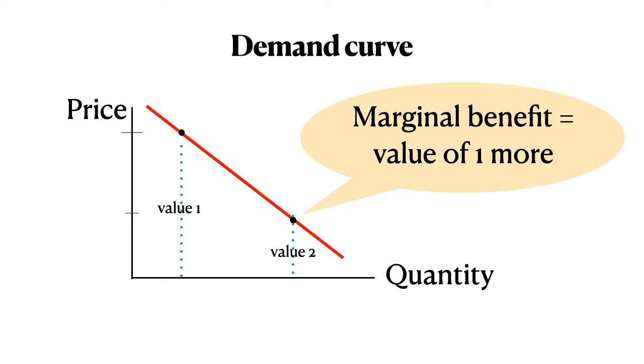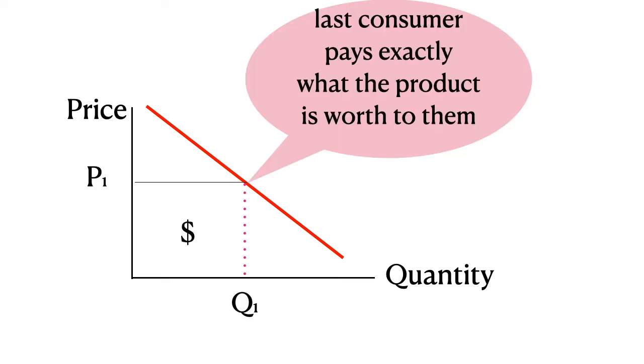So let me put in a particular price. And we can see at this price, the number of consumers who buy it is going to be Q1. And that last consumer, whoever that very last person is, will pay exactly what the product is worth to them. So maybe it costs them $5 and they value it at $5.